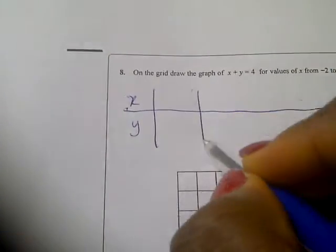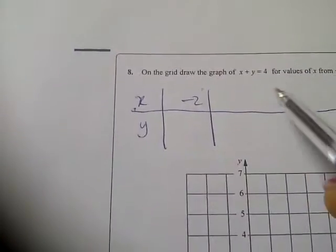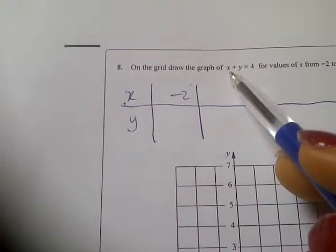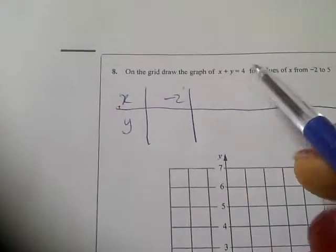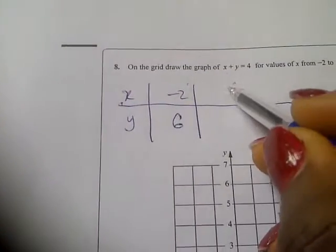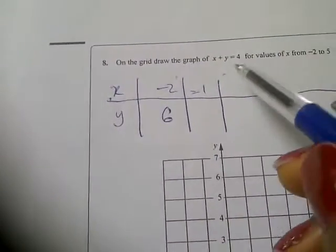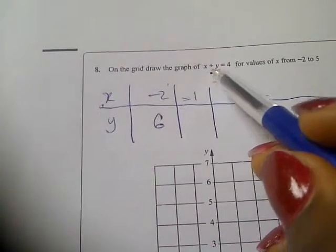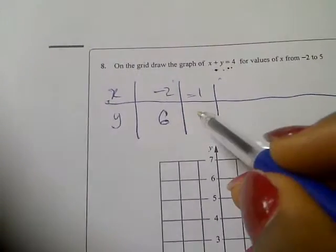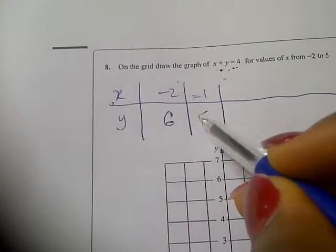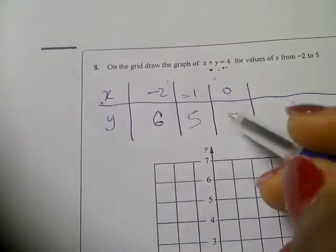When x is minus 2, minus 2 plus y equals 4, so y will be 4 plus 2, that's 6. Then when x is minus 1, minus 1 plus y equals 4, so y will be 4 plus 1, that's 5. When x is 0, y will be 4.